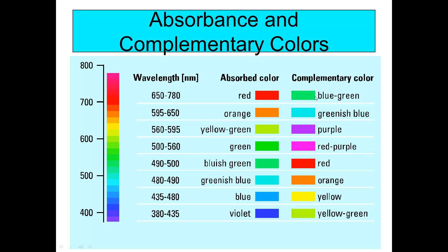For example, if the absorbed color is red, the complementary color is blue-green — plants absorb light in the red range so we see them as blue-green. If we're seeing an orange color, then the absorbed light is greenish-blue; if we're seeing red, the absorbed light is bluish-green. In our maltose color assay, we read at around 540 nm, so the absorbed light is more of a green color and we see a reddish-purple color, sometimes with a brown background.